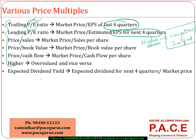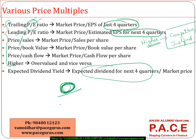Another measure under the price multiples approach is the expected dividend yield — the expected dividend over the next year divided by the market price. This represents the return the investor will physically receive as a dividend. The actual values for these ratios are easy to obtain: price comes directly from the market, while sales, book values, and other figures come from the corresponding financial statements, and get updated on a day-to-day basis.